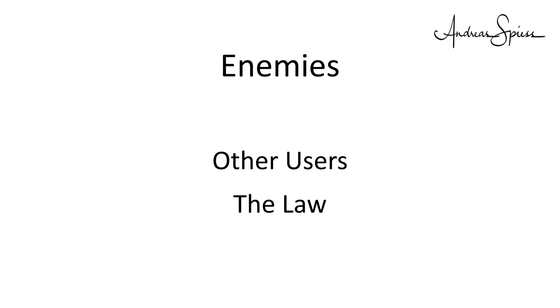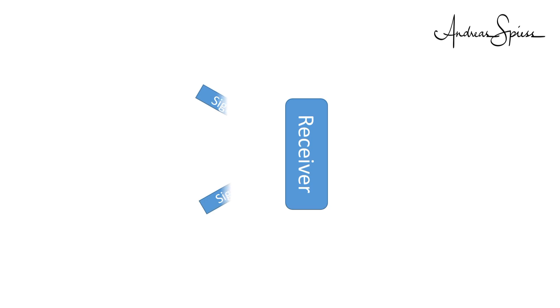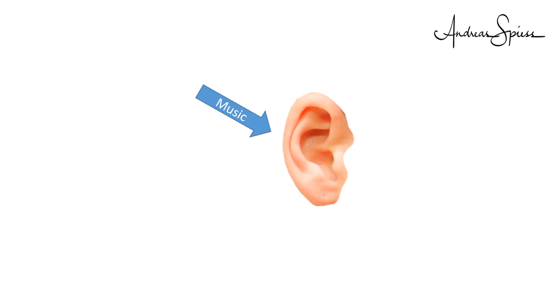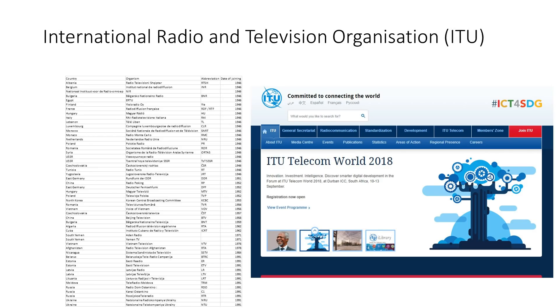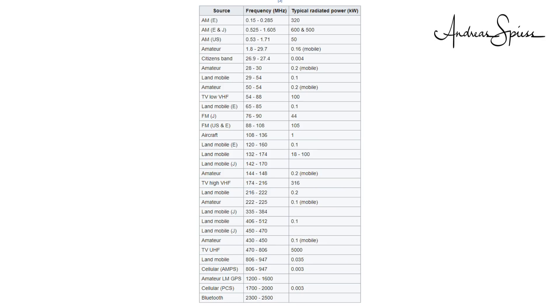Other users, because a particular frequency can only be used once at the same time in the same location. If a receiver hears two different signals at the same time, it cannot distinguish between them and no communication is possible — similar to a discotheque where your channel is occupied by loud music and conversation is nearly impossible. And as a result, laws emerged.